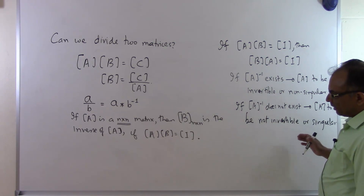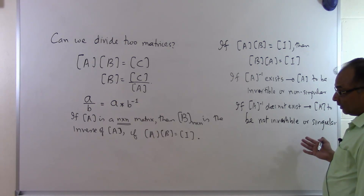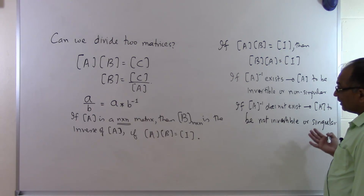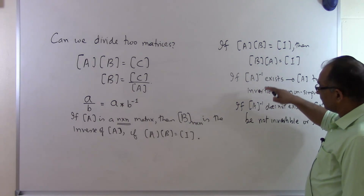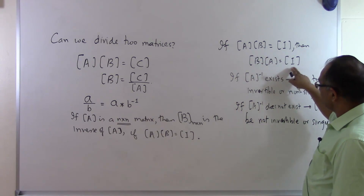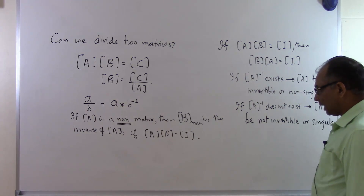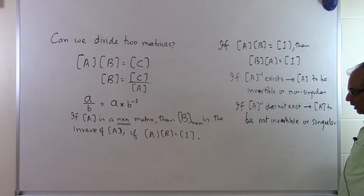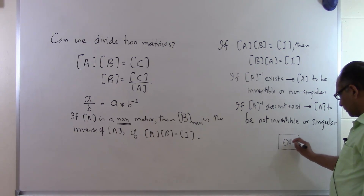The bottom line is that we cannot divide two matrices — it's not defined — but we can find the inverse of a matrix. For the inverse to exist, the matrix must be square, and not every square matrix has an inverse. To verify that B is the inverse of A, the multiplication of the two matrices must equal the identity matrix. If A times B equals I, then B times A equals I, and that's how you establish whether one matrix is the inverse of the other.